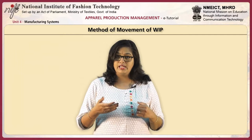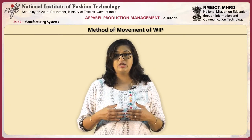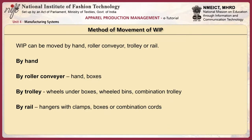Now that we have studied bundle movement, let's move on to understand the method of movement of WIP. WIP can be moved by different methods: by hand, roller conveyor, trolley, or by rail. This WIP refers to the movement of parts in between departments. It can be moved by hand, which is the traditional way, or by roller conveyor, wherein the conveyor belt moves and there are boxes kept over it. Another method is by trolley, wherein the wheels are under the boxes, or it could be wheeled bins or a combination trolley. The final method would be by rail, wherein the WIP would be moved on hangers with clamps, boxes, or combination cords.